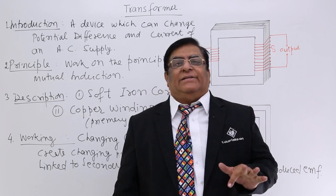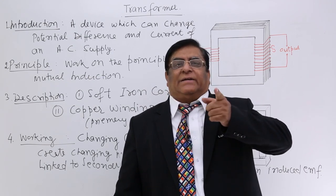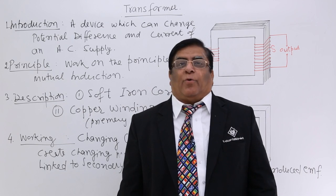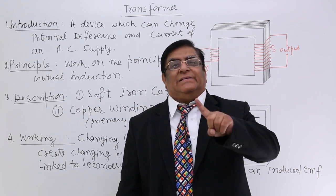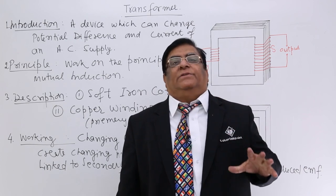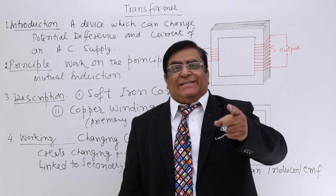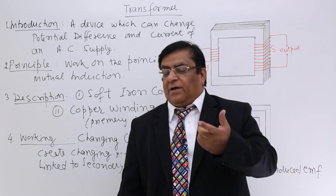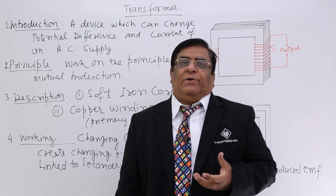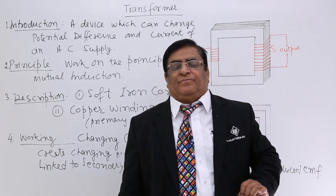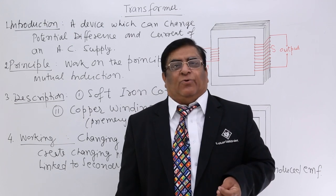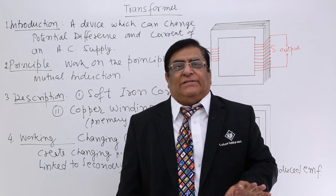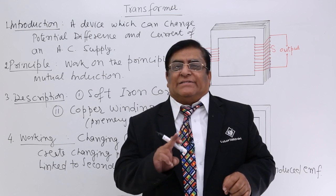A transformer cannot increase or decrease the EMF of a DC supply. For DC supply, we cannot change the EMF once it is generated, and that is the problem with DC. That is why AC has become successful all over the world — because its voltage can be increased or decreased. We will see in upcoming lectures how this phenomenon is used for transmission, and that increase and decrease of voltage is done by a transformer. The transformer is very important; without it we cannot distribute electricity all over the country.